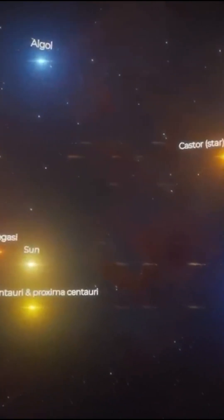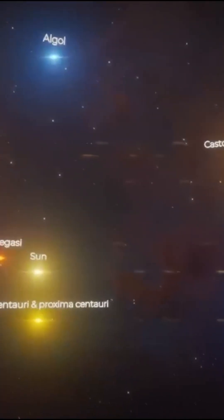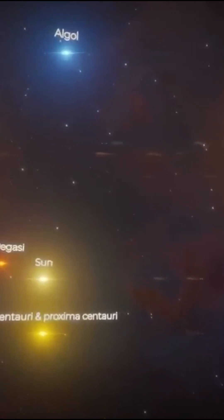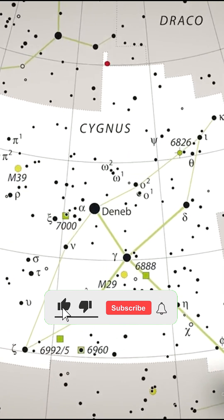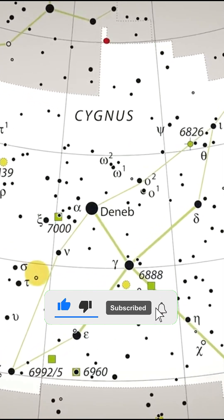61 Cygni, also known as Bessel's star, is a system of two orange dwarf stars of spectral class K, of types comparable to the Sun, located in the constellation Cygnus.